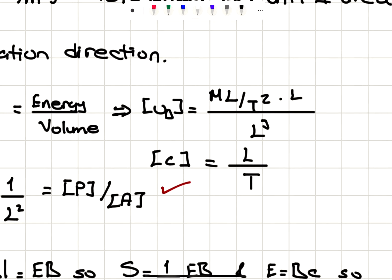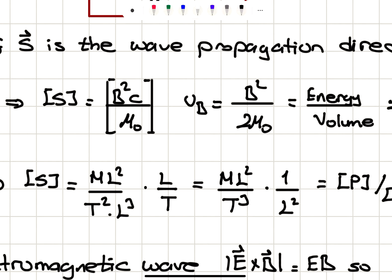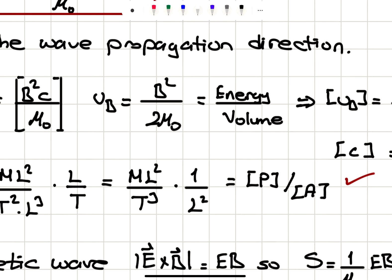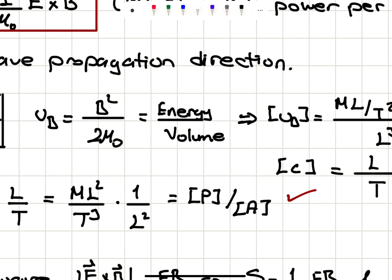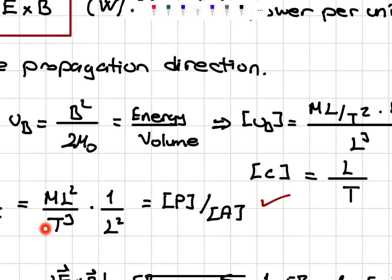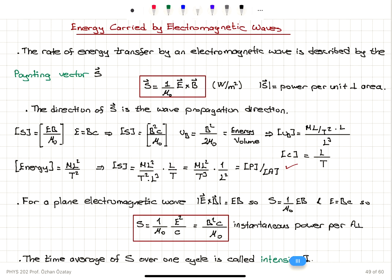So the dimension of S is ML squared over T squared times L cubed, multiplied by L over T, giving ML squared over T cubed times 1 over L squared. ML squared over T squared was energy, so energy divided by time gives power. Therefore this is the dimension of power divided by area, which is measured in watts per meter squared — confirming the Poynting vector is indeed power per area.